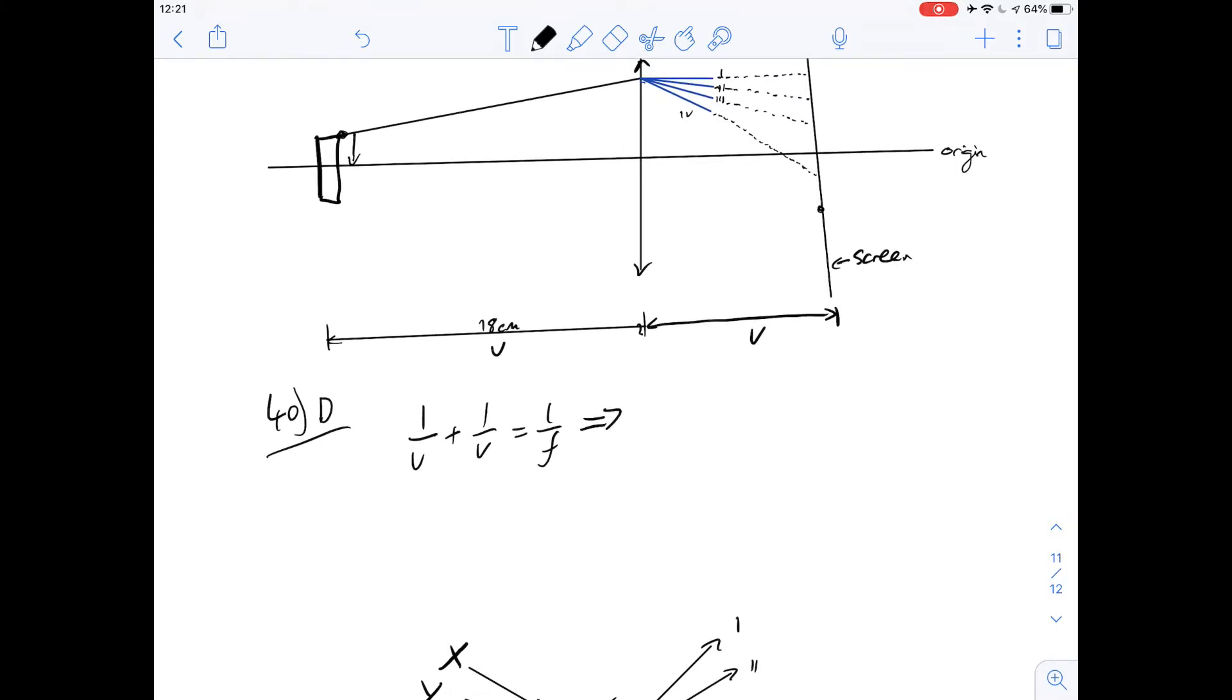So let's plug in our numbers and see what we got. We get 1 over 18 plus 1 over v equals 1 over 6. 1 over 6 could also be written as 3 over 18 which makes it a little easier because we can do 3 over 18 minus 1 over 18 as 1 over v. Therefore 2 over 18 is 1 over v and v equals 9 centimetres. In this case that would tell us that 41 is answer A.